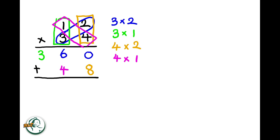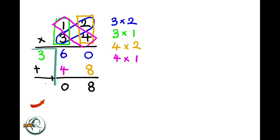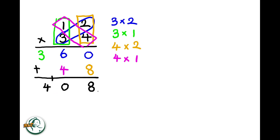Now, we add these two sets of products. Adding zero and eight gives us eight. And six plus four is ten. We write down the zero and carry over the one. Adding the carried over one to three, we get four. Therefore, the product of 12 and 34 is 408.